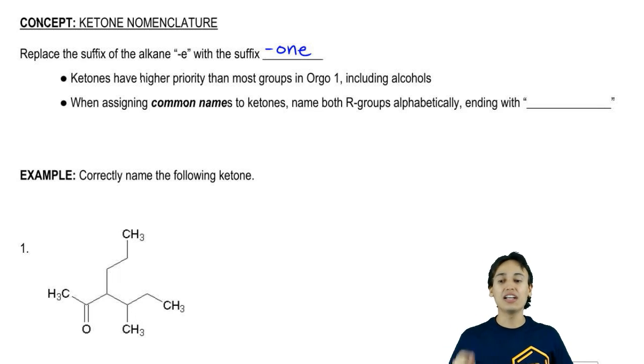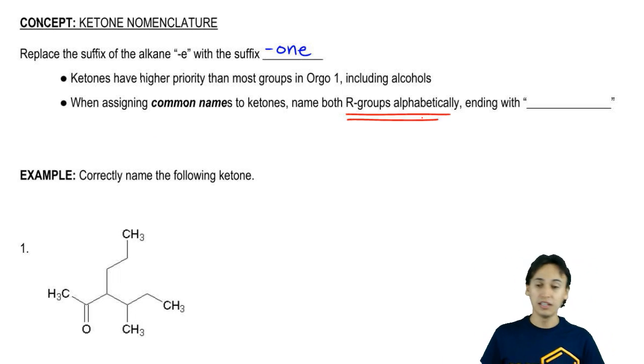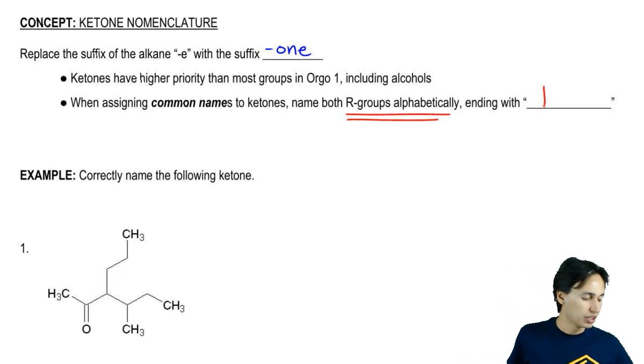When you're assigning common names to ketones, there's IUPAC name and there's common names. When you're assigning common names to ketones, you're going to name both of the R groups alphabetically and end with the word ketone.